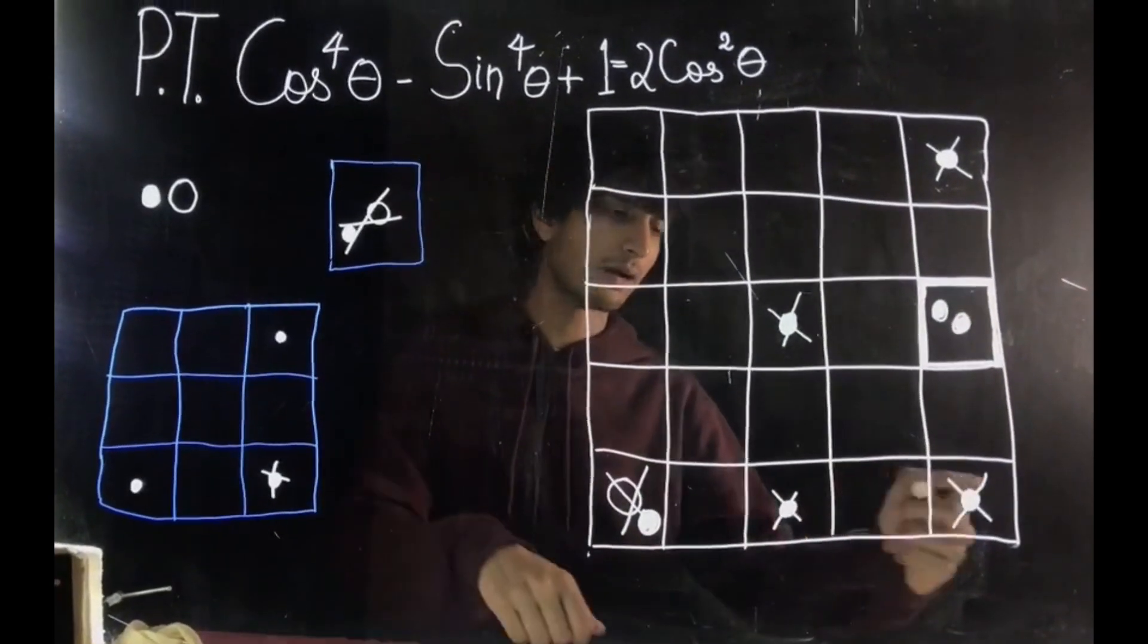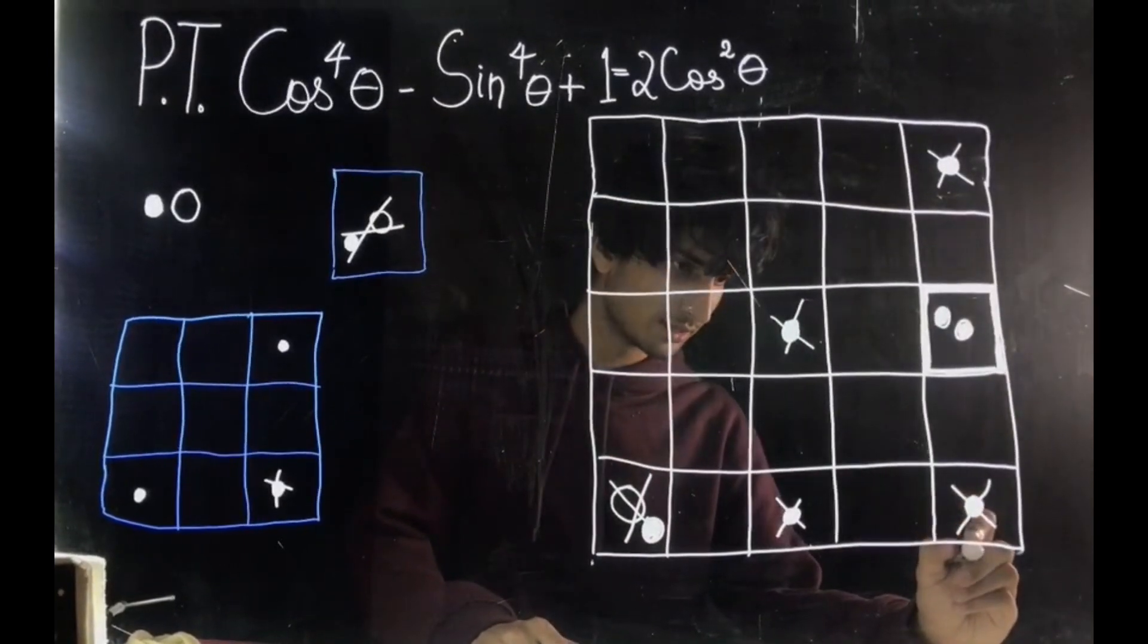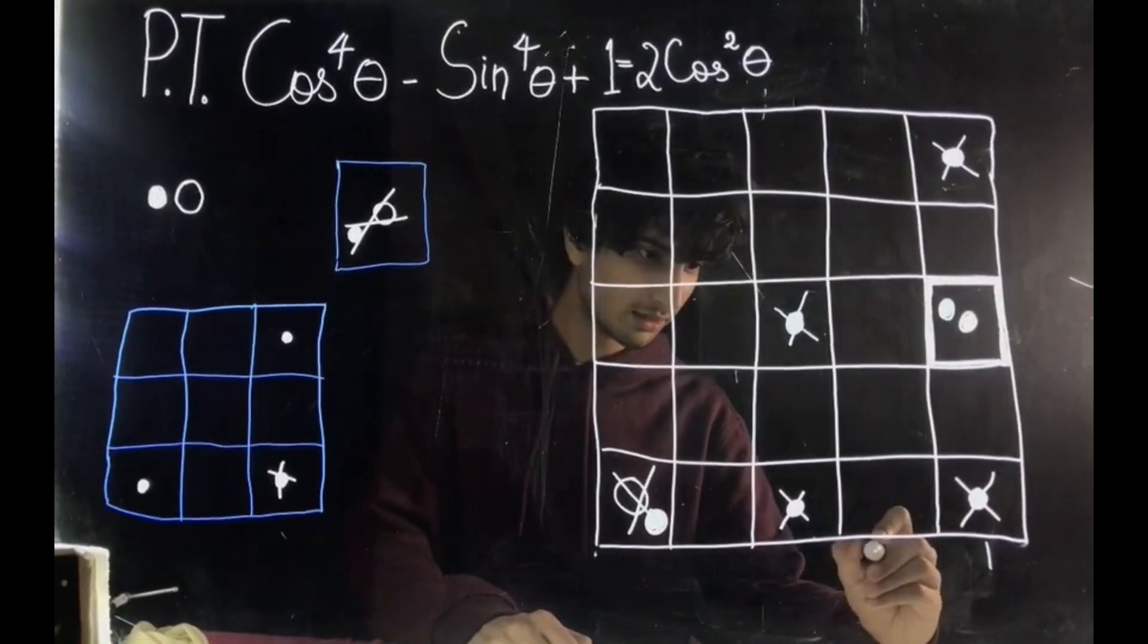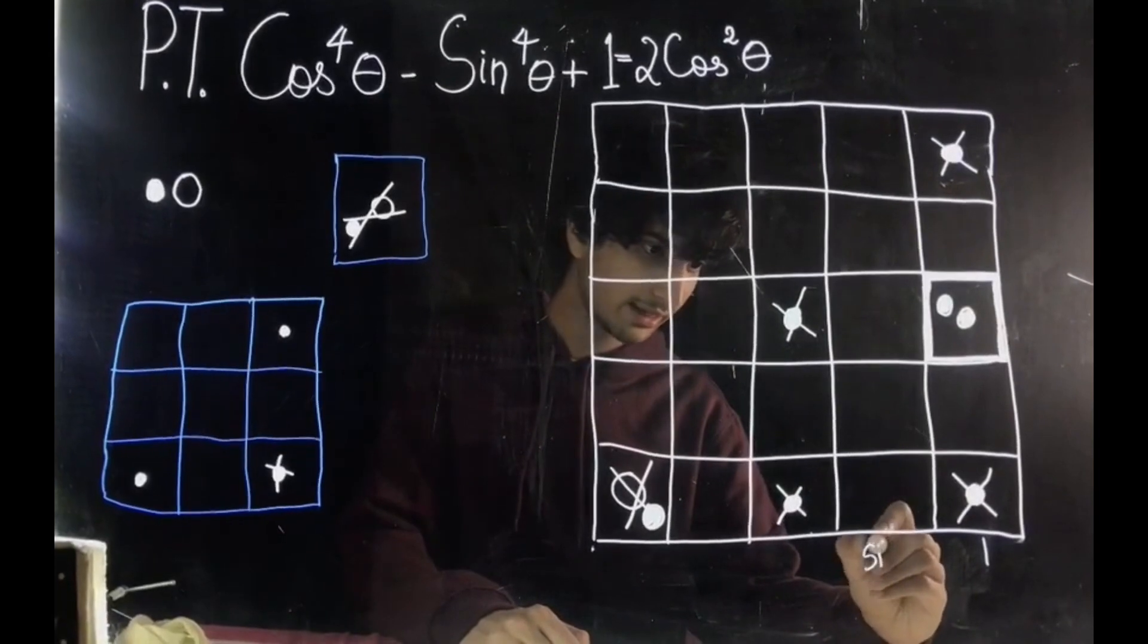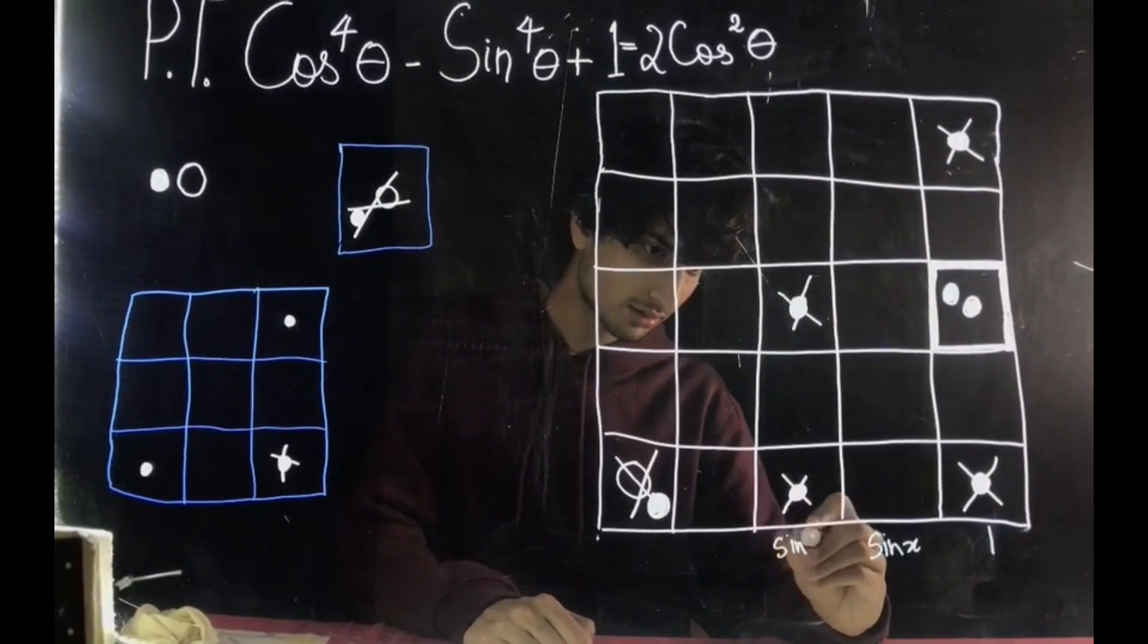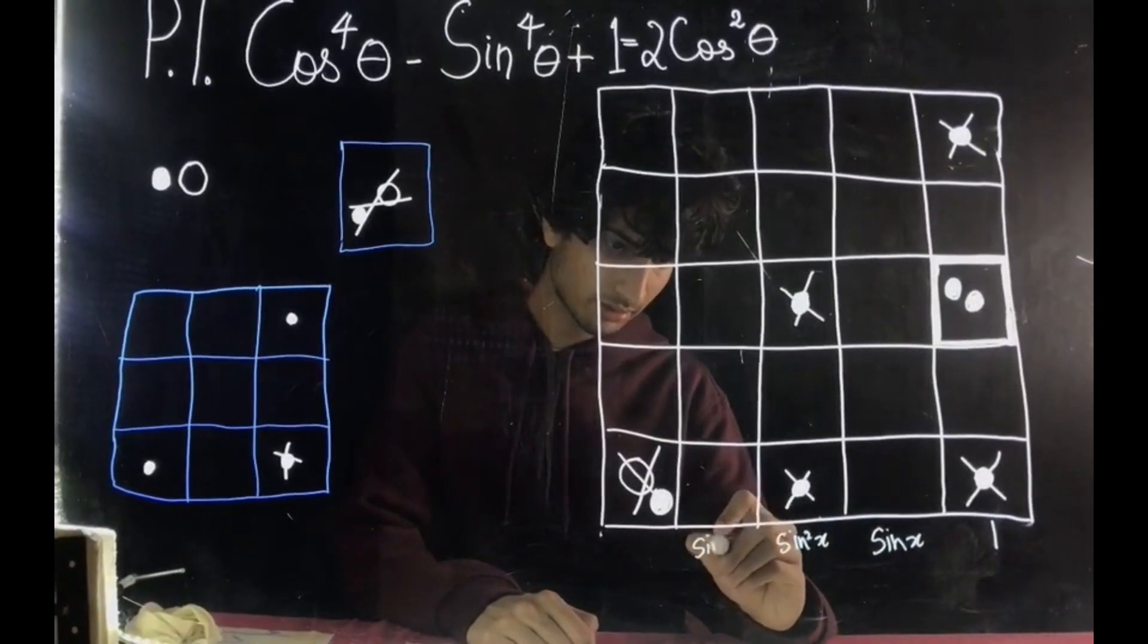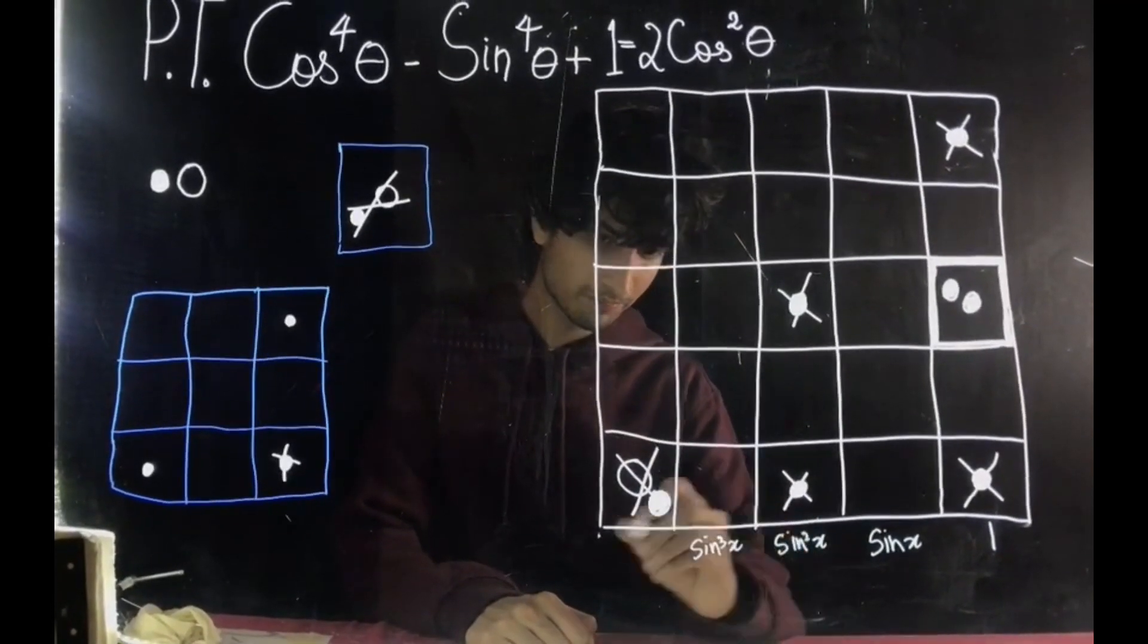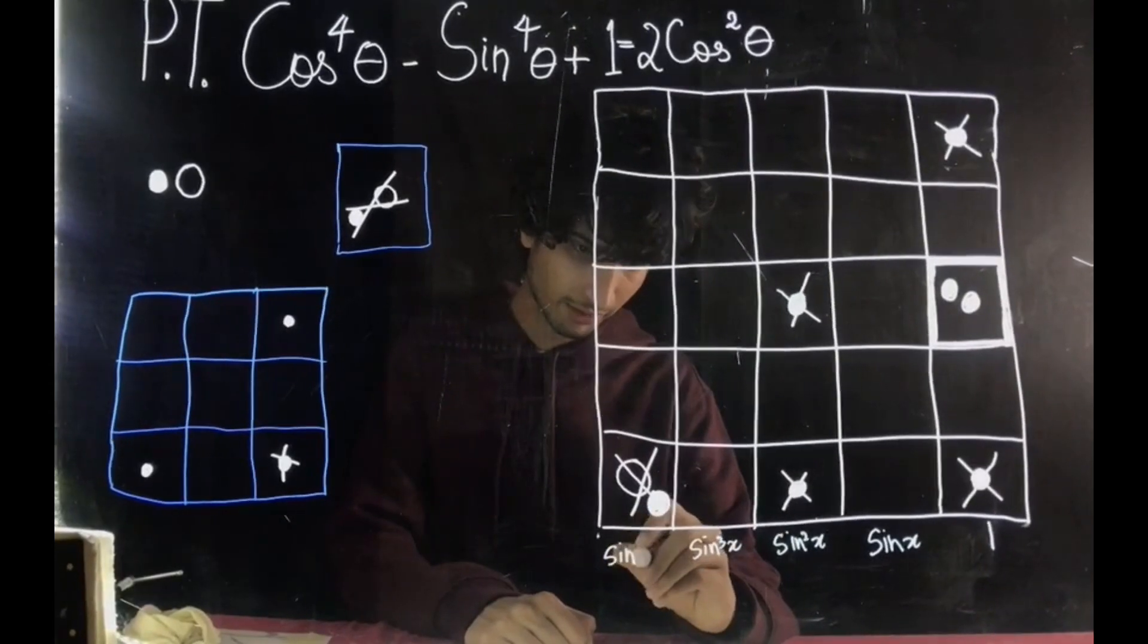Now, applying the arithmetic place value system, this will be the ones. Let's say this is sin x, sin square x, sin cube x, and sin to the power 4 x.